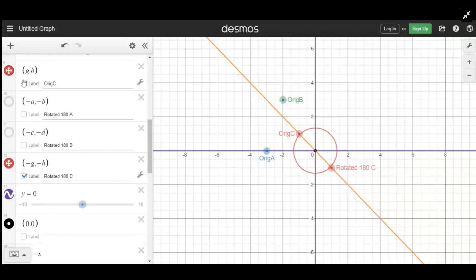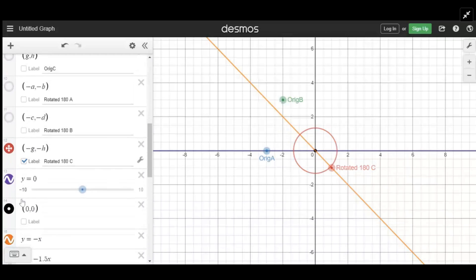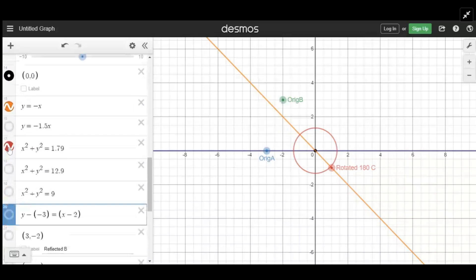So now we're going to get rid of our original C because we already used it, and we're going to get rid of the circle. Now we're going to do the same with B. So if we draw the circle that has a center at the origin and goes through point B, if you think about it, we're going to go here and we're going to go all the way around 180 degrees until we get here.